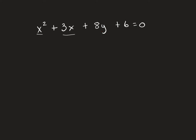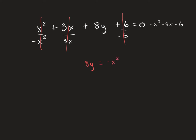I'm going to move this, this, and this over to the right side of the equation. I'm going to subtract x squared, subtract 3x, and subtract 6 on both sides. So on the right side I get minus x squared, minus 3x, and minus 6. When I do that, those terms on the left are gone, but the 8y is still there. So I've got 8y equals negative x squared minus 3x minus 6.